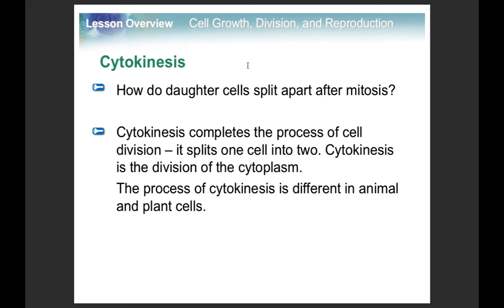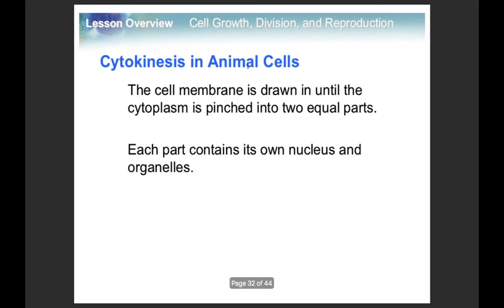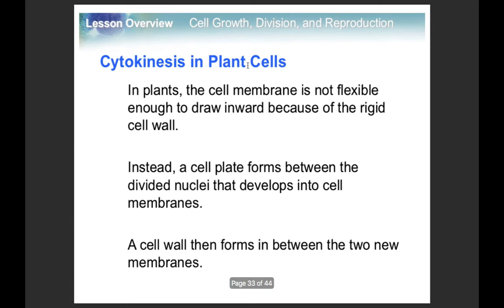Then cytokinesis happens. Remember, it is not technically part of mitosis — it is a separate step. In animal cells, you get a little pinch in the middle, so it kind of looks like a peanut. In plant cells it's different, because it forms what's called a cell plate — a border wall right down the middle.